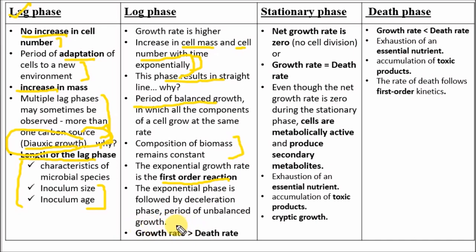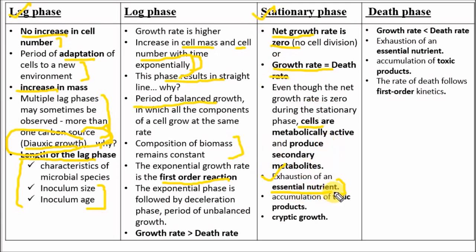In the stationary phase, the growth rate μg is greater than the death rate kd during log phase, but in the stationary phase the net growth rate is zero because growth rate equals death rate. Although the net specific growth rate is zero, cells are metabolically active and produce secondary metabolites. The stationary phase occurs due to exhaustion of essential nutrients and accumulation of toxic products. Cryptic growth refers to when cells utilize dead cells as a substrate and grow upon them.